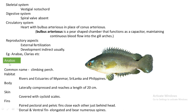The first example is Anabas. It is commonly called the climbing perch. It is a very common fish found in our rivers and streams. Regarding its habitat, it is found in rivers and estuaries of Myanmar, Sri Lanka, and the Philippines, and is also common in our state. The body is laterally compressed, meaning it is compressed from both sides.